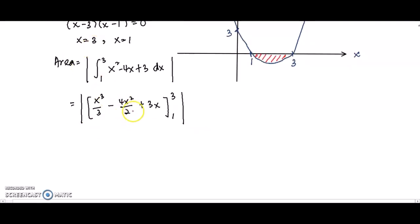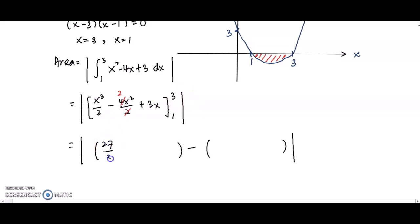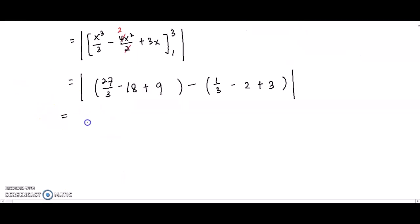We can simplify before substituting limits. Setting up two brackets: substituting 3 gives 27 over 3 minus 18 plus 9; substituting 1 gives 1 over 3 minus 2 plus 3. After calculating, we get negative 4 over 3. Since there is a modulus sign, we convert negative 4 over 3 to positive, because area is always positive. The final answer is 4 over 3 unit squared.